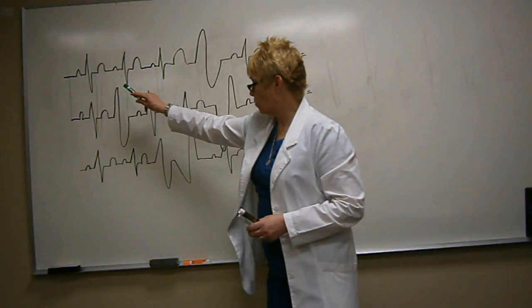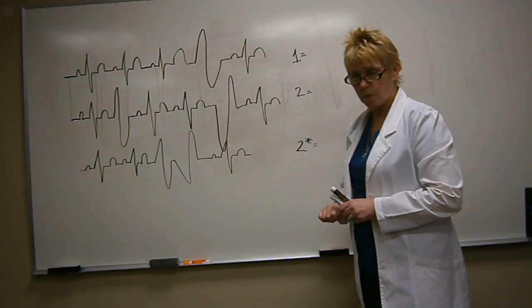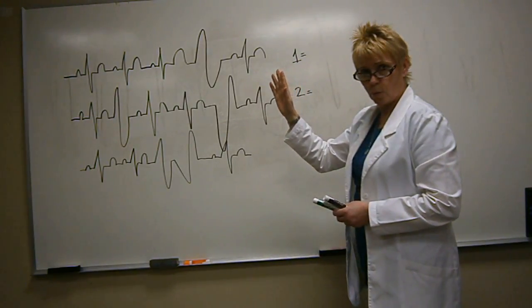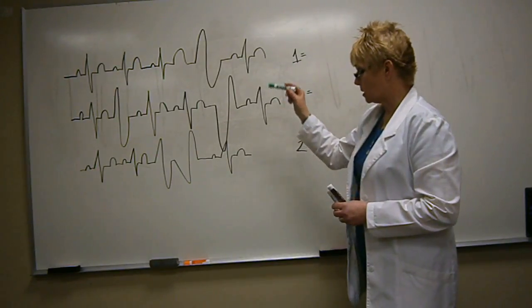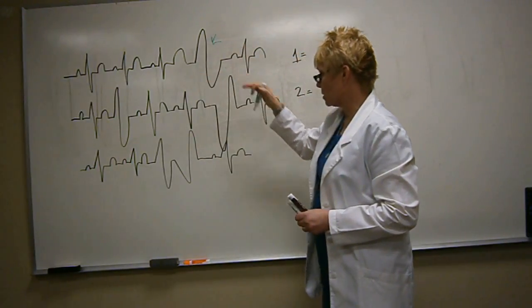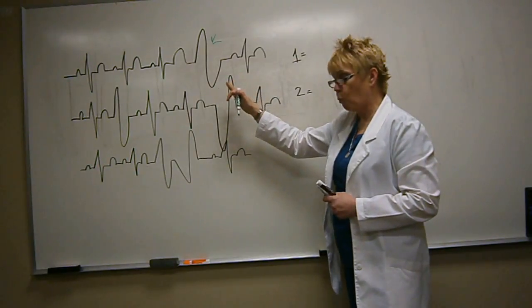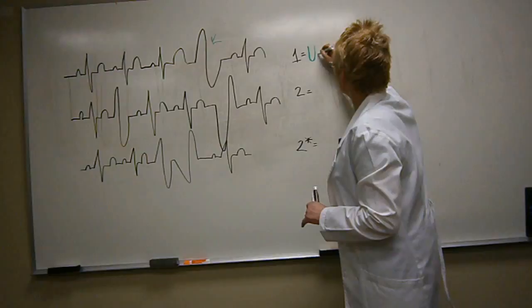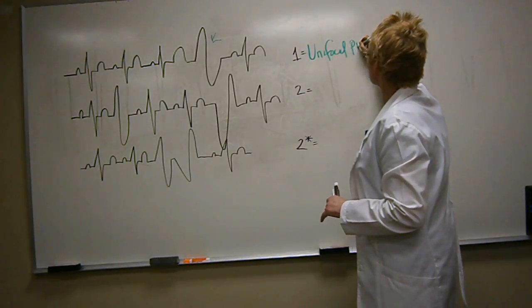So here you have one, two, three sinus rhythms, and then you have a very abnormal beat that has the QRS in one waveform, in one direction, and the T wave in the opposite. So this is a PVC, right here, with a resolution to a sinus rhythm. When you have a PVC of one shape, one morphology, it is called a unifocal PVC.